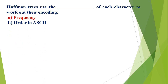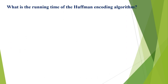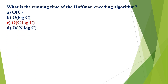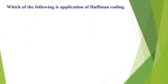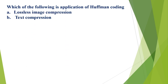Huffman tree uses the blank of each character to work out their encoding: A) frequency, B) order in ASCII, C) number value, D) none of the above. The correct option is A, frequency. What is the running time of the Huffman encoding algorithm? A) O(C), B) O(log C), C) O(C log C), D) O(N log C). The correct option is C, O(C log C). Applications of Huffman coding include: A) lossless image compression, B) text compression, C) audio, D) all of the above. The correct option is D, all of the above.